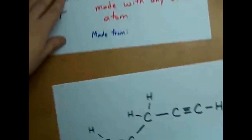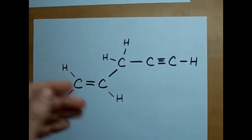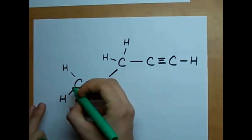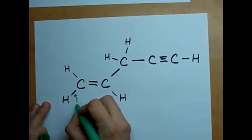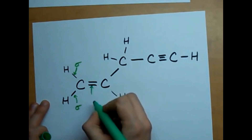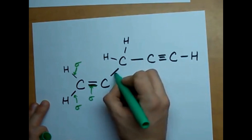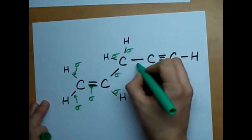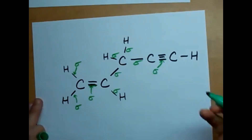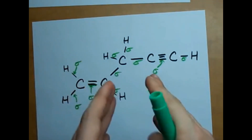Here is a picture of a compound. Every first bond is a sigma bond. A bond between carbon and hydrogen — the first one is a sigma bond. Every single bond carbon makes with something else is going to be a sigma bond. In a double bond, one of the bonds is sigma because it is the first bond made.